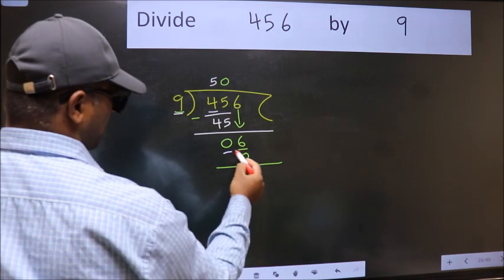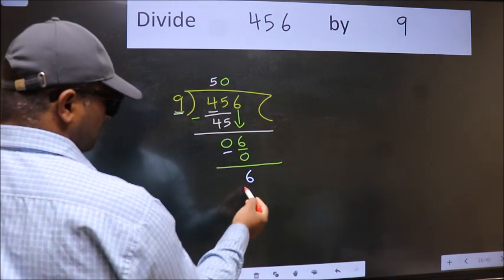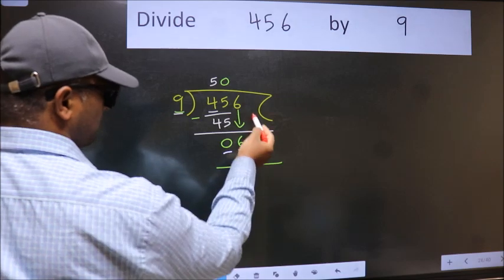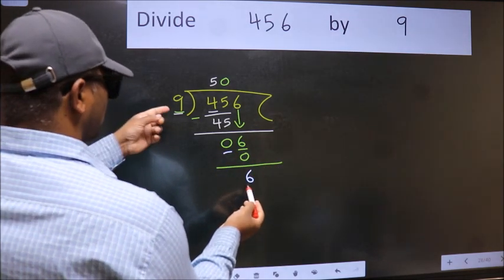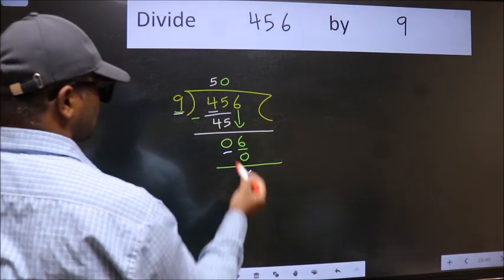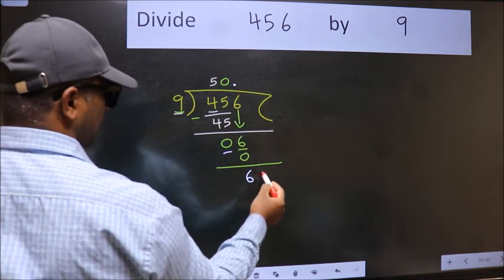Now we subtract. We get 6. Over here we did not bring any number down, and 6 is smaller than 9.